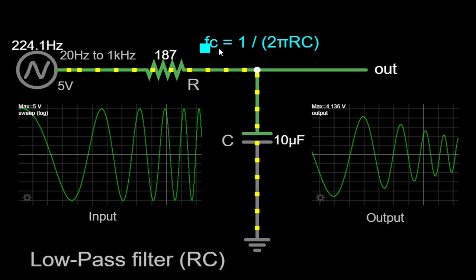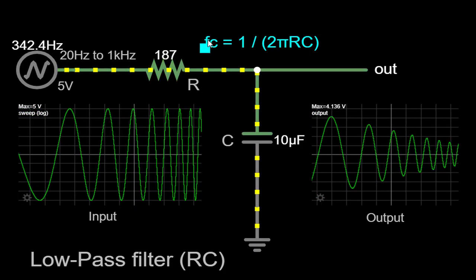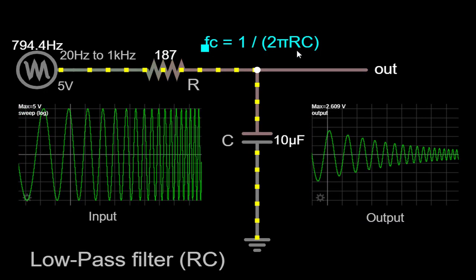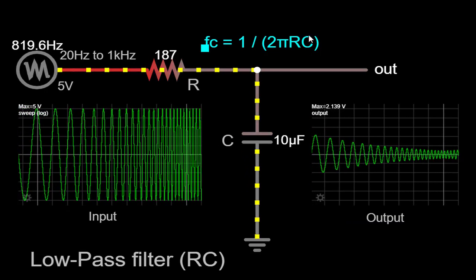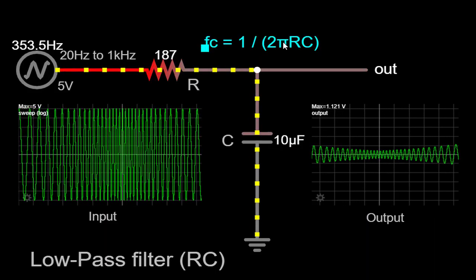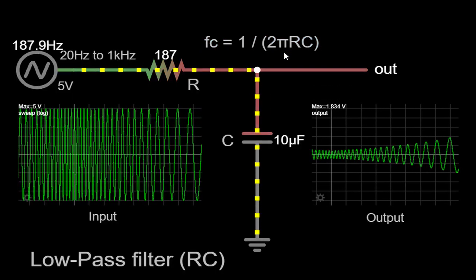Where FC is the cutoff frequency in hertz, R is the resistance in ohms, C is the capacitance in farads, and π is a mathematical constant approximately equal to 3.14159.